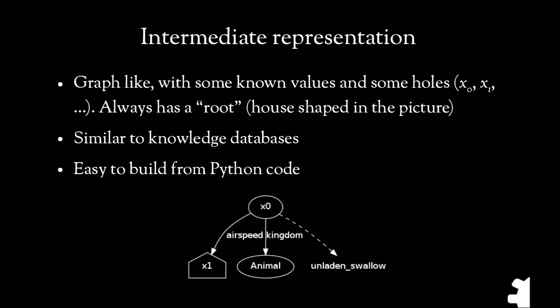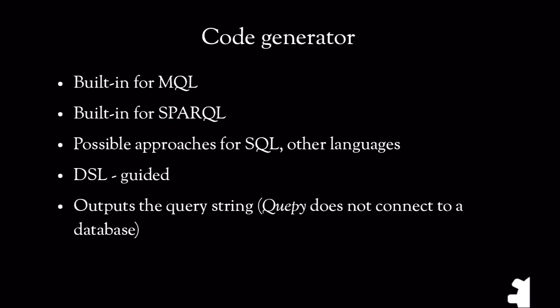Those components you compose together, along with the mapping of those components to the semantics of your database schema, is what we call the DSL. From the intermediate representation tree and DSL information, it's possible to automatically build a query string to send to your database. We have built query generators for SPARQL, which is the de facto standard for knowledge databases, and MQL, the Metaweb Query Language, which is what Google's Freebase uses. It might also be possible to build custom generators for other languages or use adapters that put a SPARQL endpoint in front of a regular SQL database.